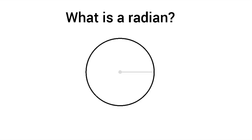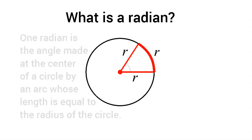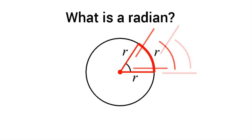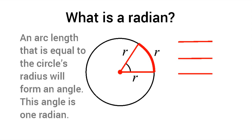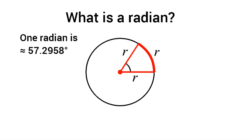A radian is just an angle measure, but it's a very specific angle. The angle is formed by taking the length of the circle's radius and marking that same length off on the arc of the circle. The angle created by that arc is considered one radian — the arc length equals the circle's radius. One radian is approximately equal to 57.2958 degrees.